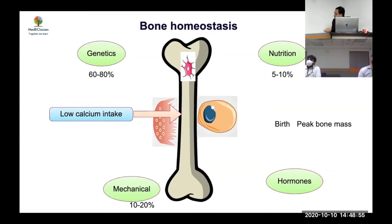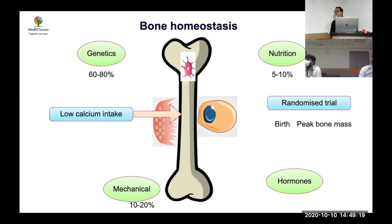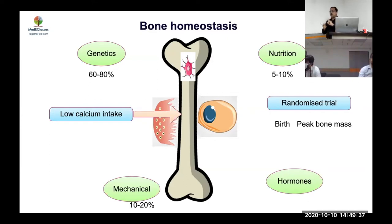The question of whether calcium directly causes improved bone density remains unanswered due to confounders. Ideally, you'd do a randomized trial — give calcium supplementation to 50,000 children from birth and follow them to age 25, with half getting calcium and half not. But this is impossible — too expensive, too complicated, and ethically unfeasible. The same applies to testing whether cigarette smoking causes cancer prospectively.